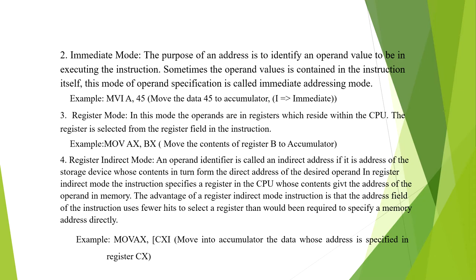The fourth mode is Register Indirect Mode. An operand identifier is called an indirect access if it is the address of a storage device whose contents in turn form the direct address of the desired operand. The instruction specifies a register in the CPU whose contents give the address of the operand in memory. The advantage is that the address field uses fewer bits to select a register than would be required to specify a memory address directly. Example: move AX, [CX] — move into the accumulator the data whose address is specified in register CX.